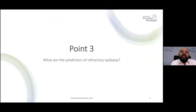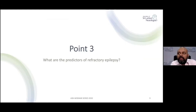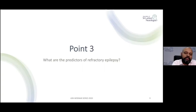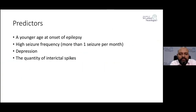The third point: what are the predictors of refractory epilepsy? If you are treating patients with epilepsy, you need to know who is more likely to develop refractory epilepsy. There are several predictors. A younger age of onset of epilepsy increases the chances of pharmacoresistance. If you have a high seizure burden — more than one seizure per month — there's a higher chance of the patient developing pharmacoresistant epilepsy.